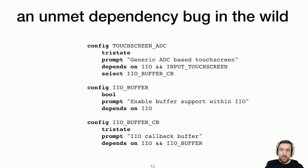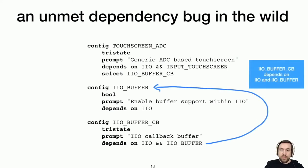To see an example of one of these unmet dependency bugs, here's this touchscreen ADC configuration option with a couple of other options that it has interdependencies with. So first note that this configuration option called IIO buffer CB, it has a dependency on two other options, IIO and IIO buffer, which means that IIO buffer CB shouldn't be able to be enabled unless its dependencies are met.